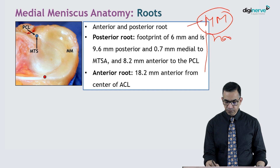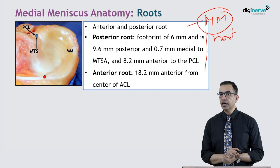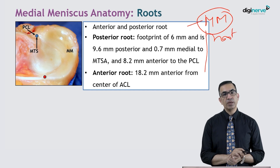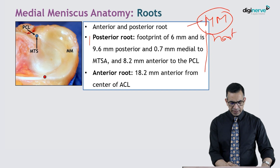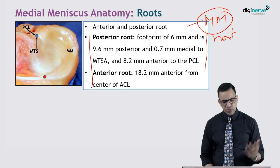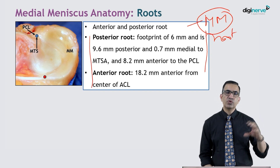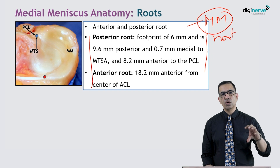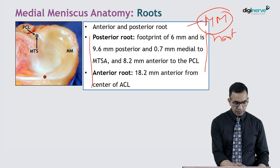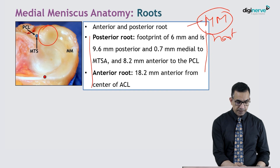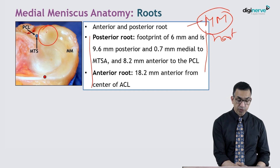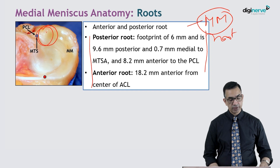I would suggest reading about medial meniscus root tears separately — there are many review articles, and it could be an advanced examination question. The measurements I have written are used when we are trying to repair the root, as when a medial meniscus root tear happens it avulses, and to re-anchor the root we need to know these landmarks.